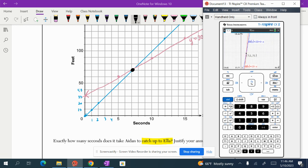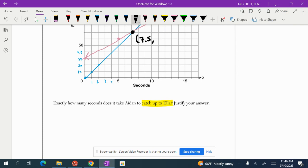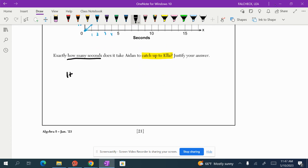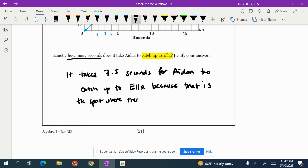Here and here. They're intersecting at 7.5 comma 75. Okay. So remember the 7.5 is talking about seconds and the 75 is talking about feet from the starting line. So exactly how many seconds? So it's asking us for an answer in seconds. Does it take Aiden to catch up to Ella? It takes 7.5 seconds for Aiden to catch up to Ella, because that is the spot where they are the same distance, 75 feet from the starting line. The end.